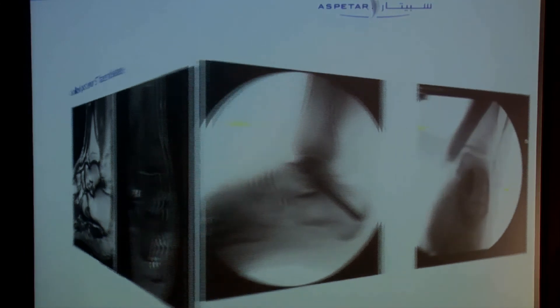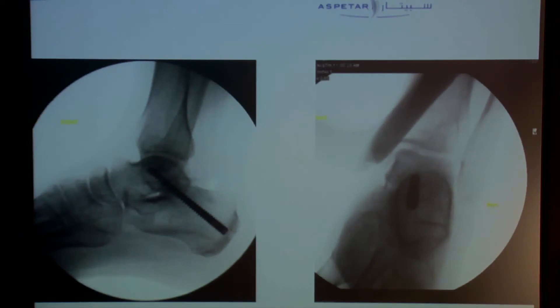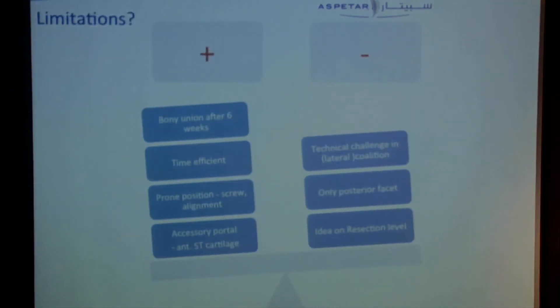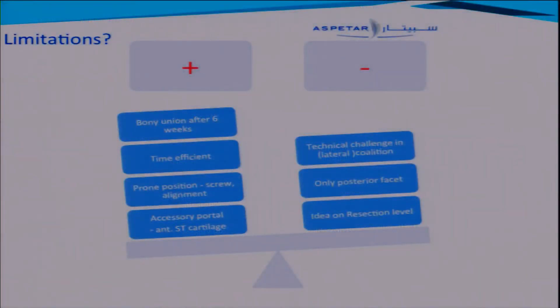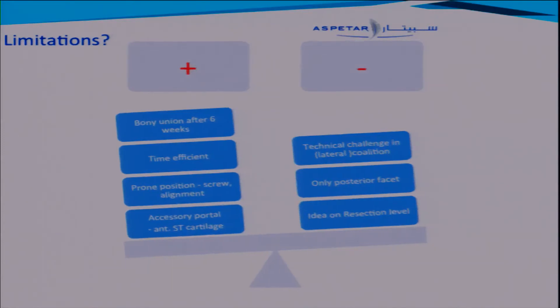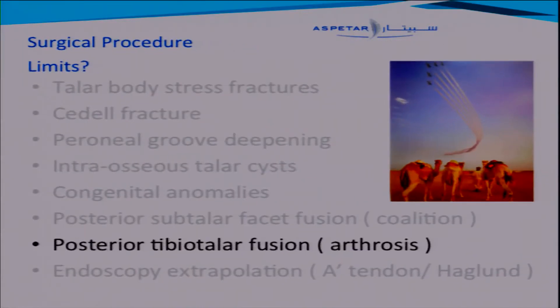One advantage is bony union after six to seven weeks. It's time-efficient, you have a good ankle position, and you use an accessory portal that is not in a danger area. The downside is that it's technically challenging — you only reduce the posterior facet for fusion and don't always have an idea on the resection level.